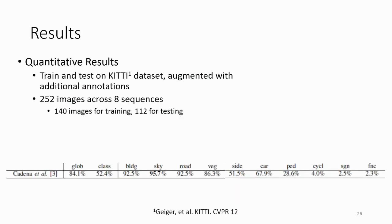To validate our algorithm, we trained and tested on the KITTI dataset, which we augmented with our own additional annotations. We took eight sequences and annotated 252 images across them in both the image and the point cloud side. We then split them into four sequences for training and four for testing. We compared to a previous state-of-the-art algorithm, which is Kadena and Kashka. And they use information and features from both the 2D and 3D side in an early fusion approach.